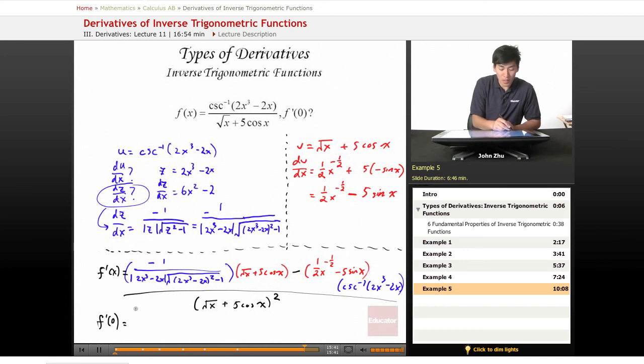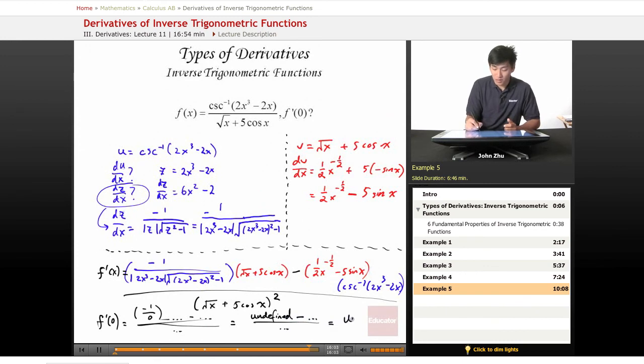So this first term becomes negative 1 over 0 times something minus the rest over the bottom term. Well, we know that anything over 0 is undefined, so this term becomes undefined. And then minus anything else over anything else, this just becomes an undefined part of this function.